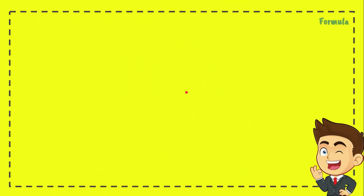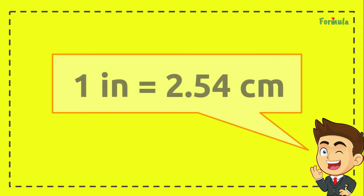This is the formula part - what we need to know before solving the problem. The formula is: 1 inch equals 2.54 centimeters.